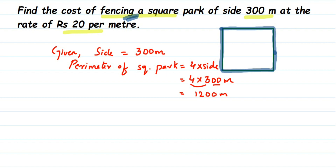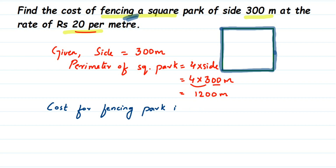The charging is 20 rupees per meter — cost for fencing a park is rupees 20 per meter, meaning for 1 meter they're charging 20 rupees. So for 1 meter it's 20 rupees, meaning for 1200 meters we multiply: 20 × 1200. Because for 2 meters it's 20 + 20 = 40, for 3 meters it's 20 × 3, so instead of adding 1200 times we just multiply.